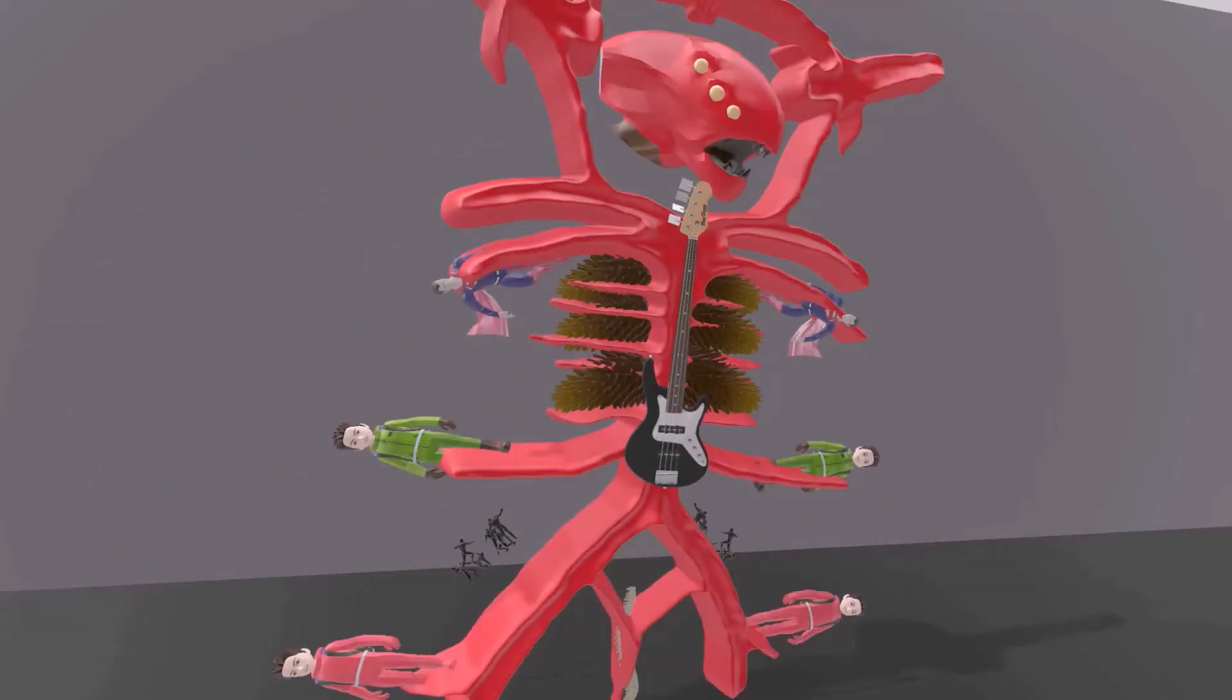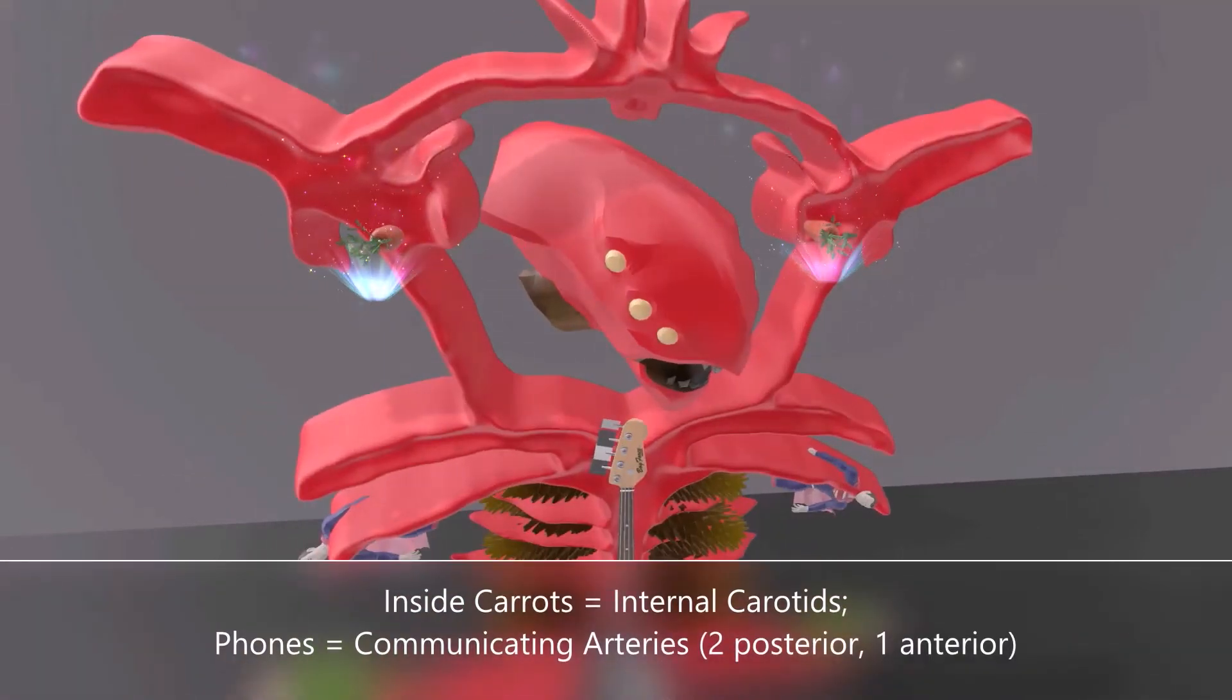Mr. Red Alien over here actually gets hungry sometimes, which is why he carries these carrots with him. He has these carrots inside of him. Carrots inside, or the inside carrots for internal carotid. These are the internal carotid arteries.